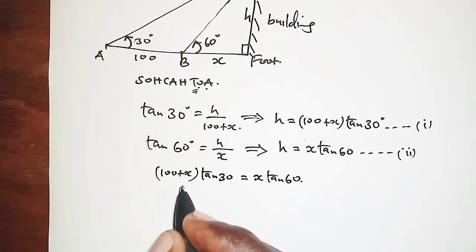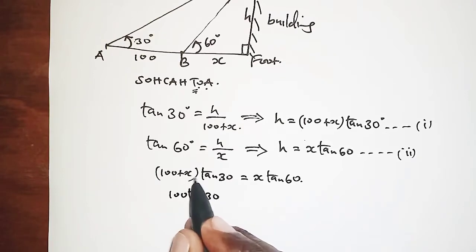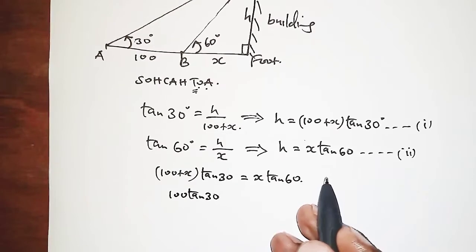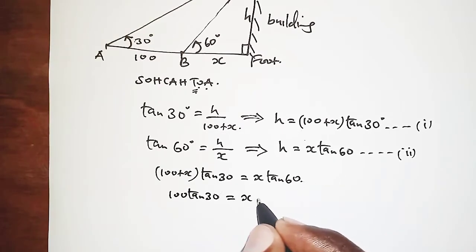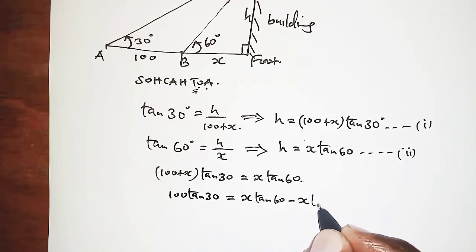So we are going to have 100 tan 30° plus X tan 30°. So the X tan 30°, I'll let it cross, so that we have equals X tan 60° minus X tan 30°.